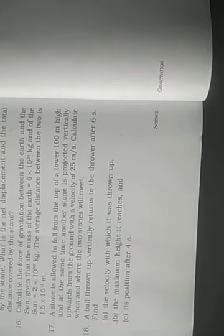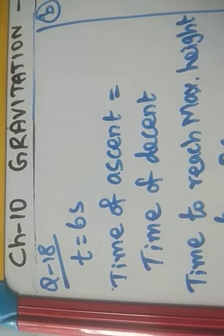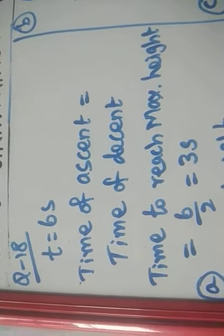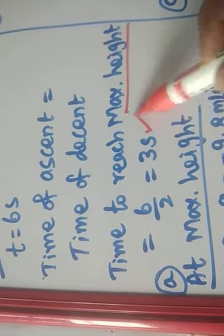What is the time taken for ascent? It will be 3 seconds, and for descent it will be 3 seconds. The time taken for ascent and descent will be equal — the time a ball takes moving upward is equal to the time moving downward. So the time taken to reach the maximum height is 3 seconds.